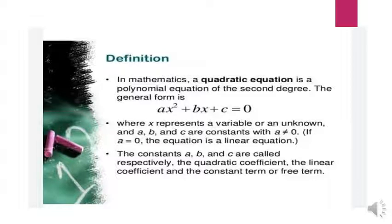The constants a, b, and c are named as follows: a is called the quadratic coefficient, b is called the linear coefficient, and c is called the constant term or free term.